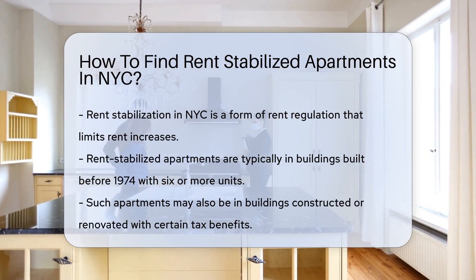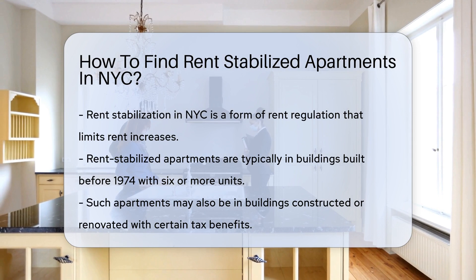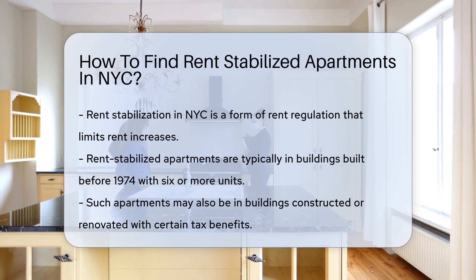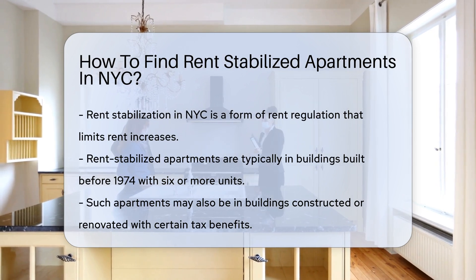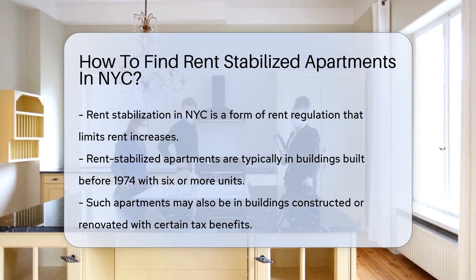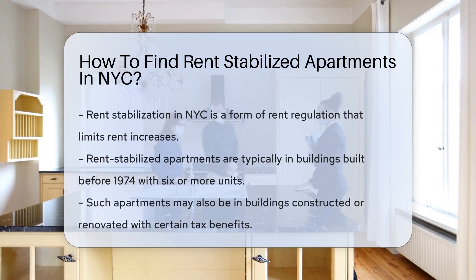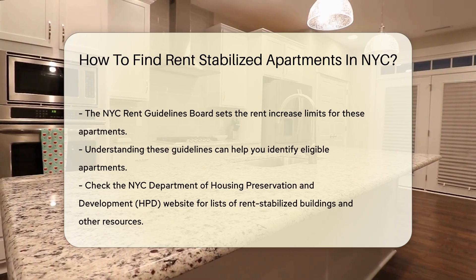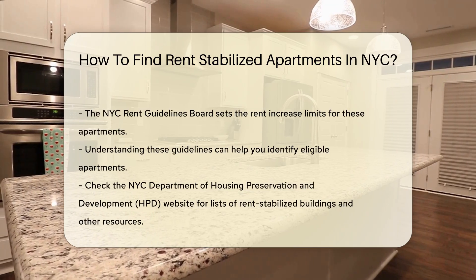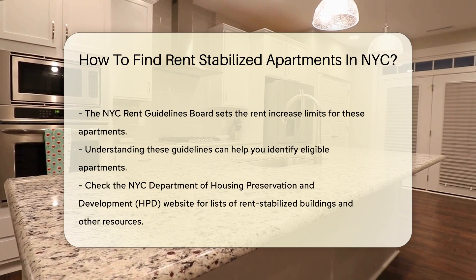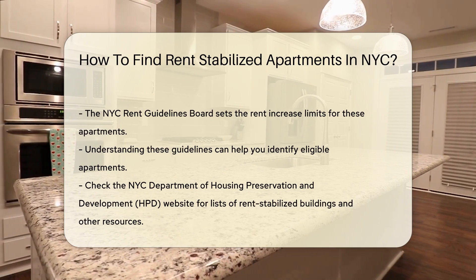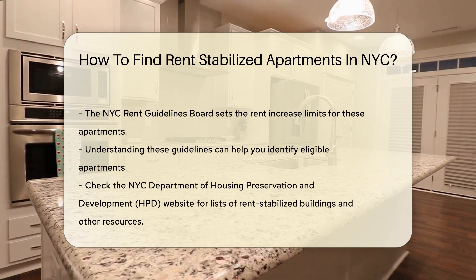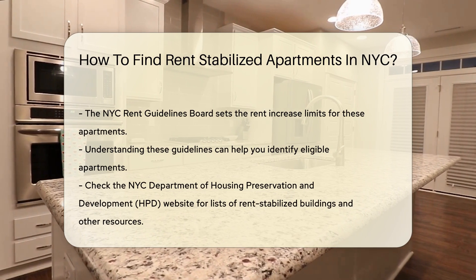First, know that rent-stabilized apartments are typically in buildings built before 1974 with six or more units. They may also be in buildings constructed or renovated with certain tax benefits. The NYC Rent Guidelines Board sets the rent increase limits for these apartments. Understanding these guidelines can help you identify eligible apartments.